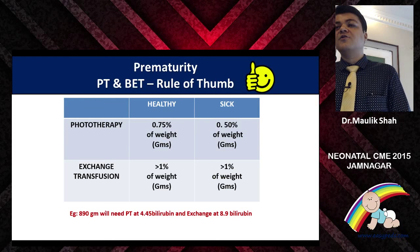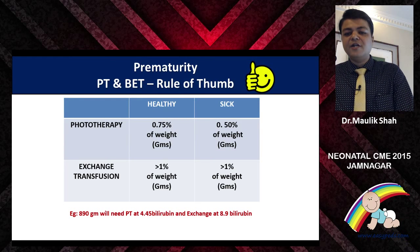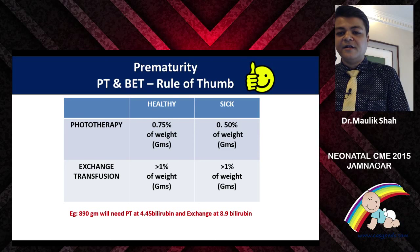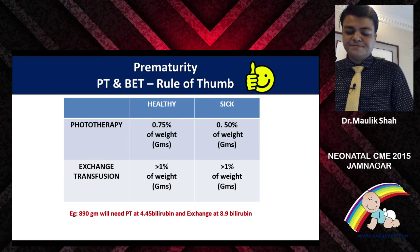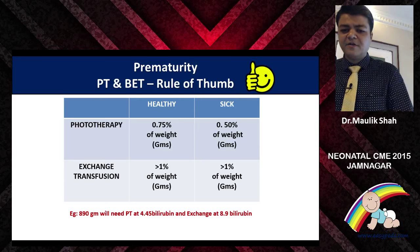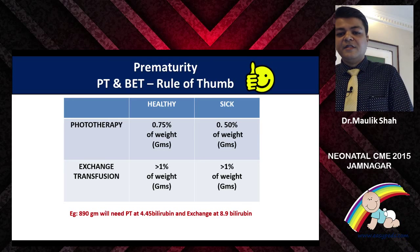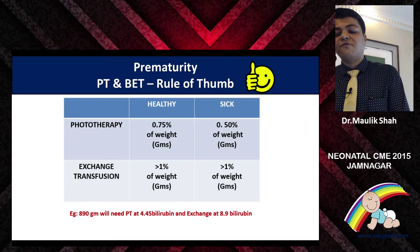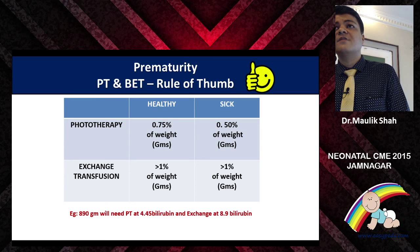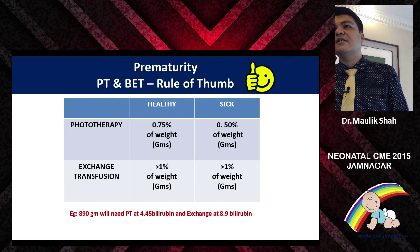In neonatal units, a rule of thumb is often followed: if the baby's weight is 1 kg, a bilirubin of 7.5 goes for possible phototherapy; if sick and bilirubin is even 5, the baby goes for phototherapy. For exchange transfusion at the cutoff of 10, exchange is done if the baby is sick. This is an arbitrary formula used for rapid clinical judgment.